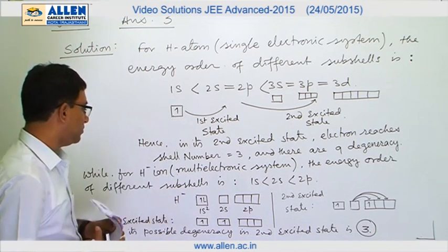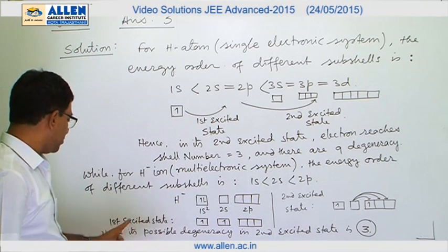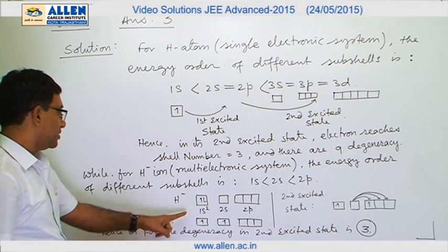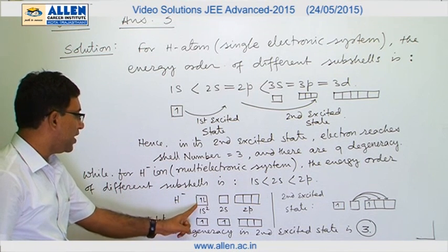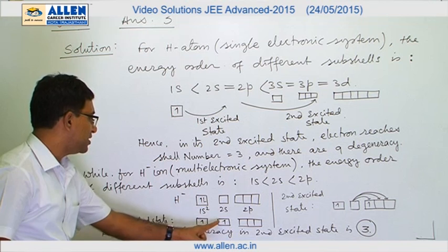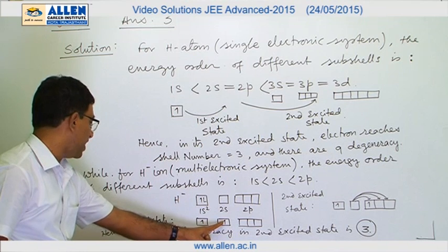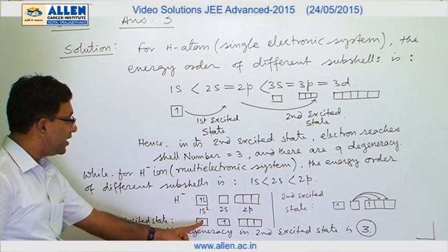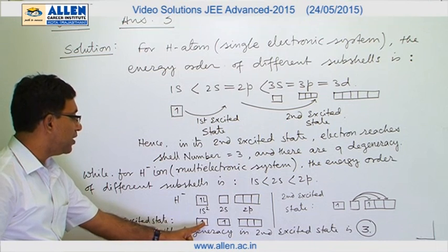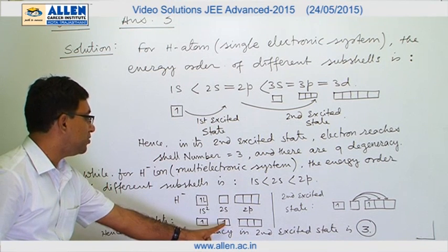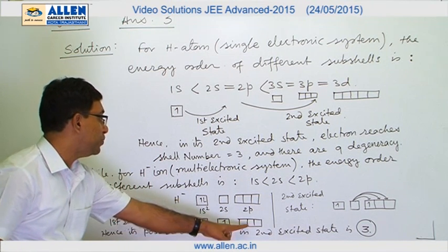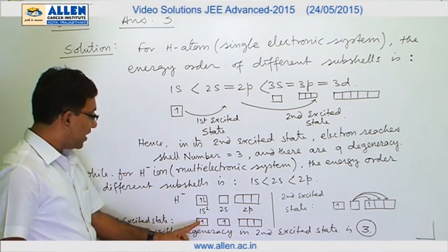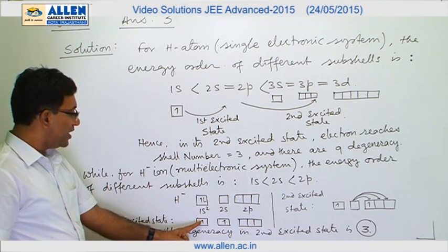In the first excited state, one electron jumps from 1s to 2s. This first excited state has one electron in 1s and one electron in 2s, with 2p vacant.